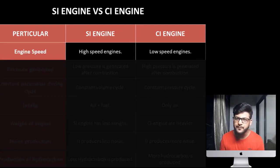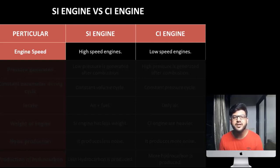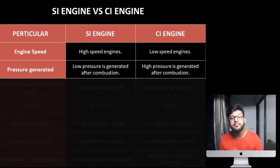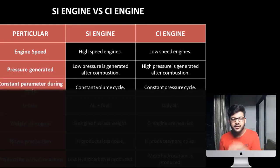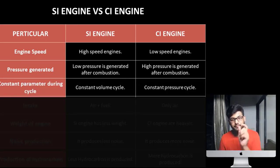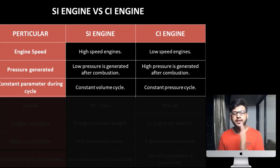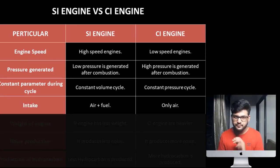One more point is engine speed. Engine speed is generally higher in petrol or SI engines, and comparatively lower in diesel engines. Next is pressure generation. In petrol engine the pressure is lower because compression ratio is low, and in CI engine the pressure is higher because compression ratio itself is high. Next is constant parameter during the cycle. In petrol engine, volume is constant — it is a constant volume cycle in SI engine. In CI engine, pressure is constant — it is a constant pressure cycle.